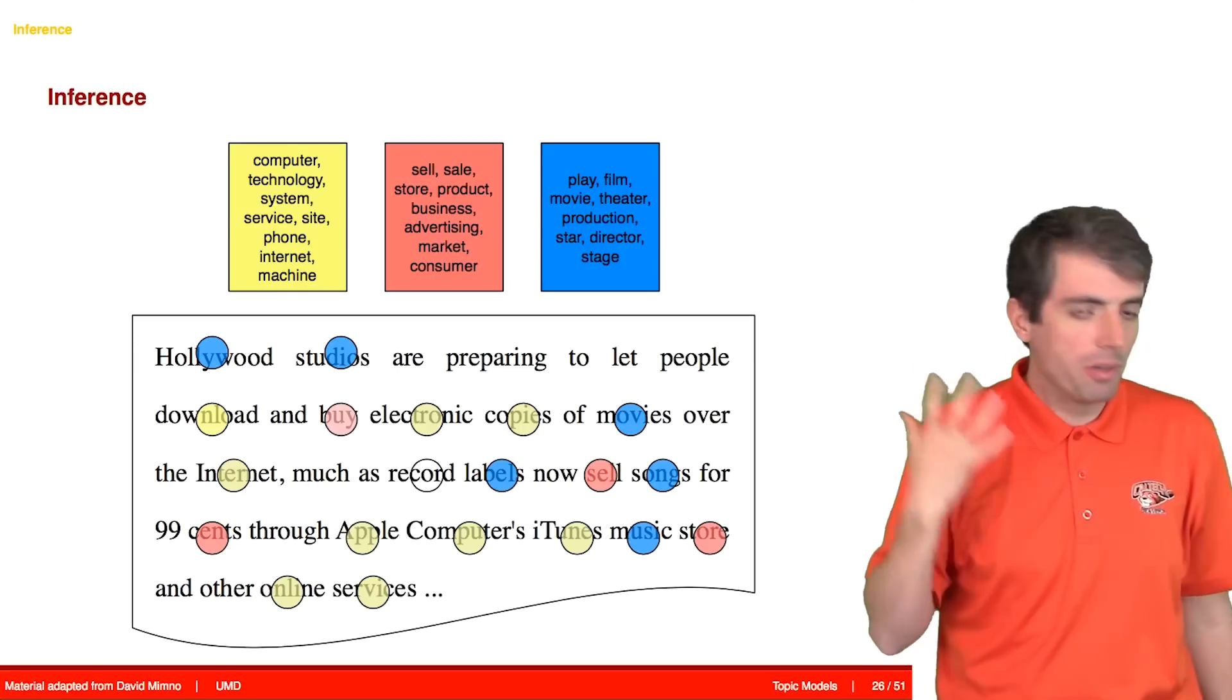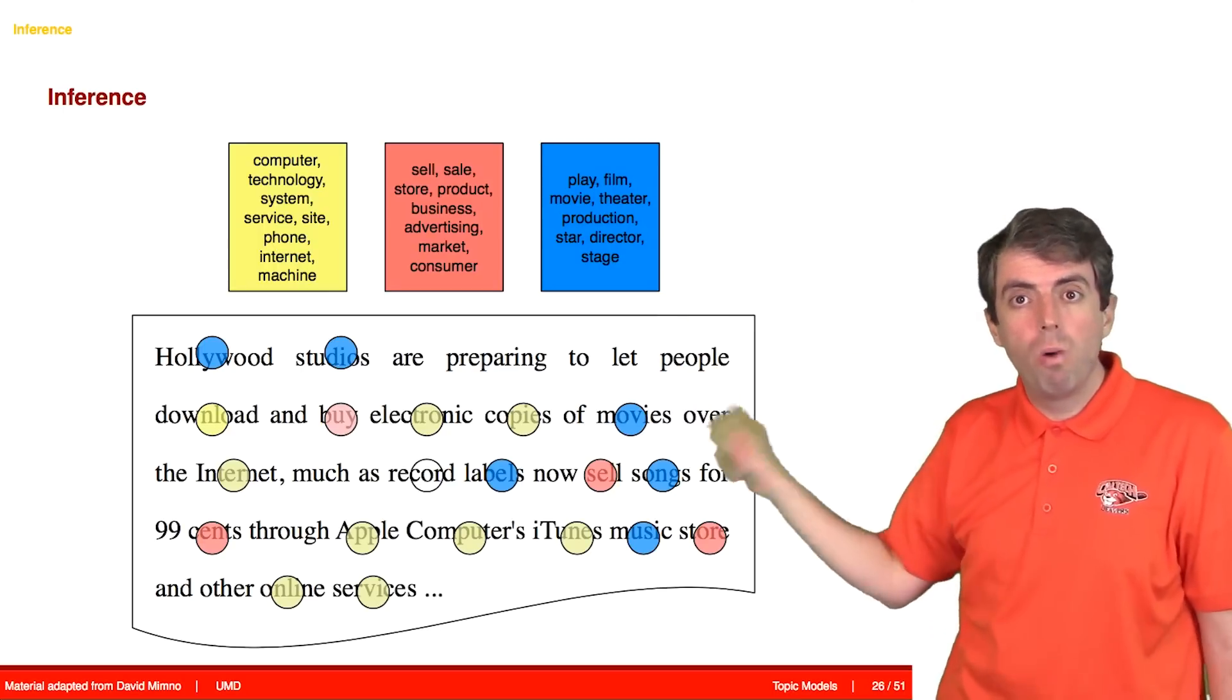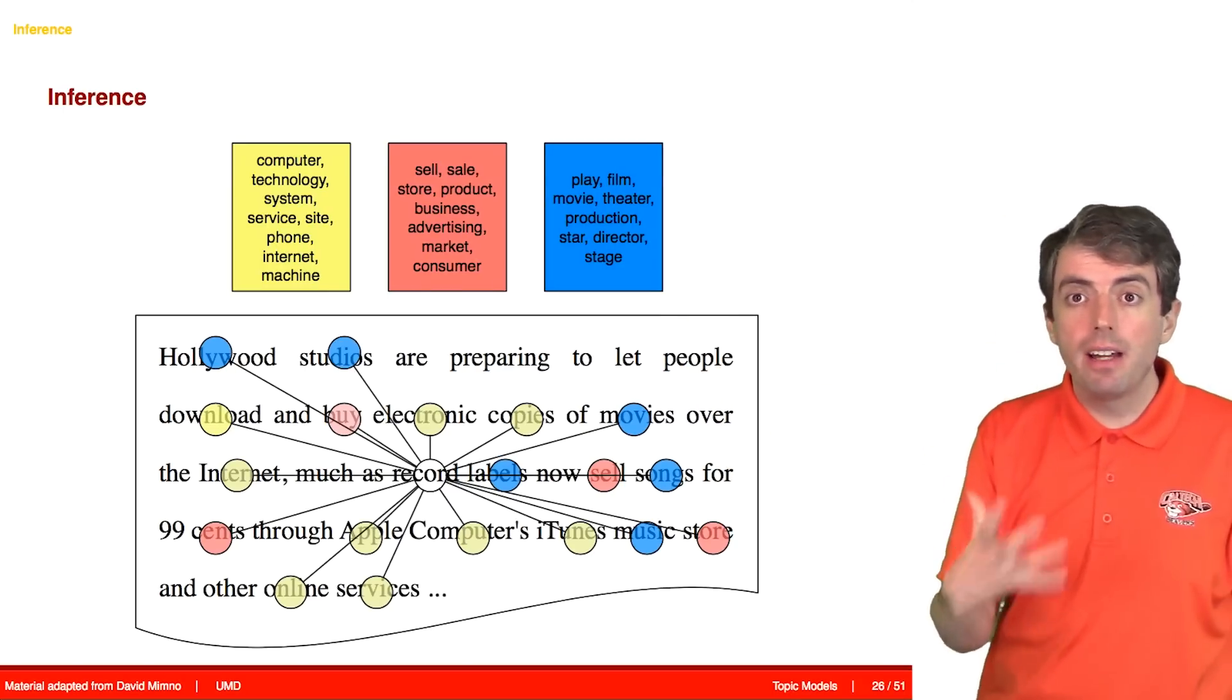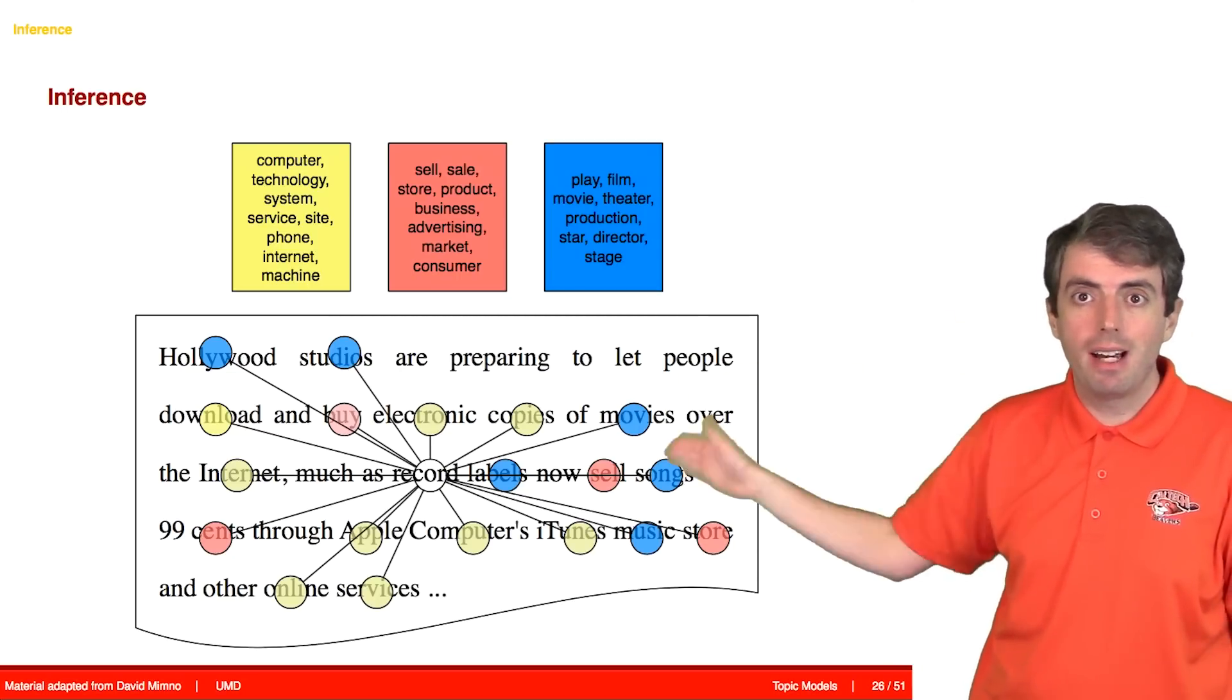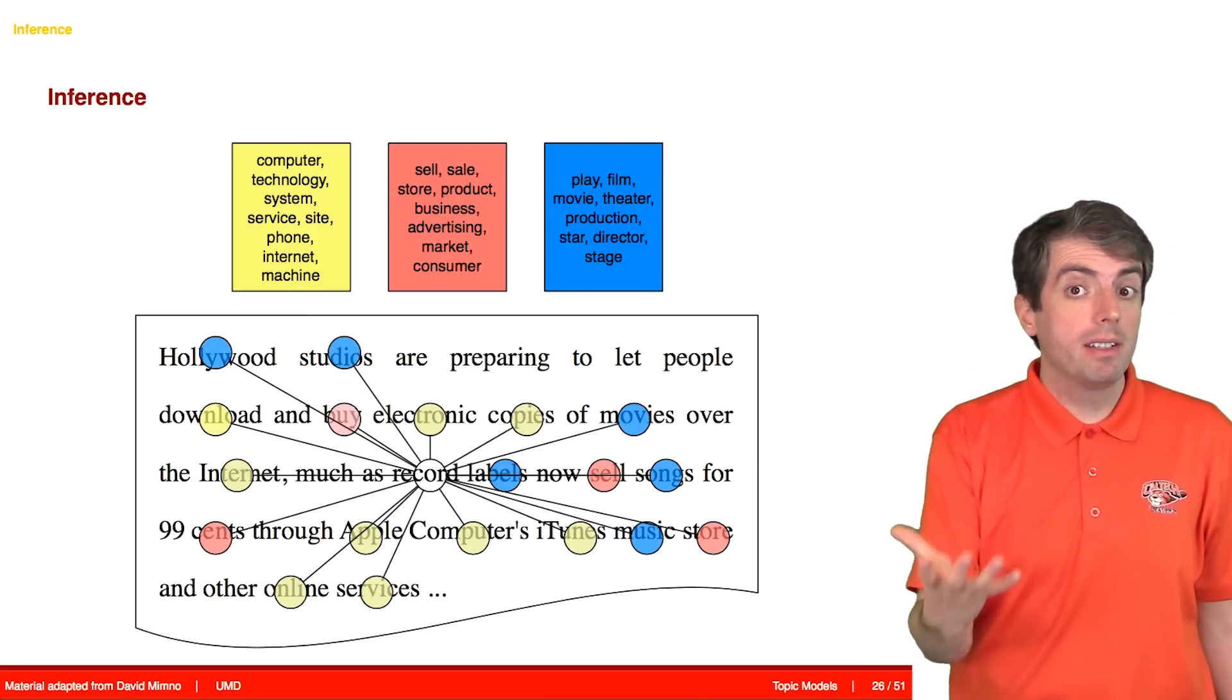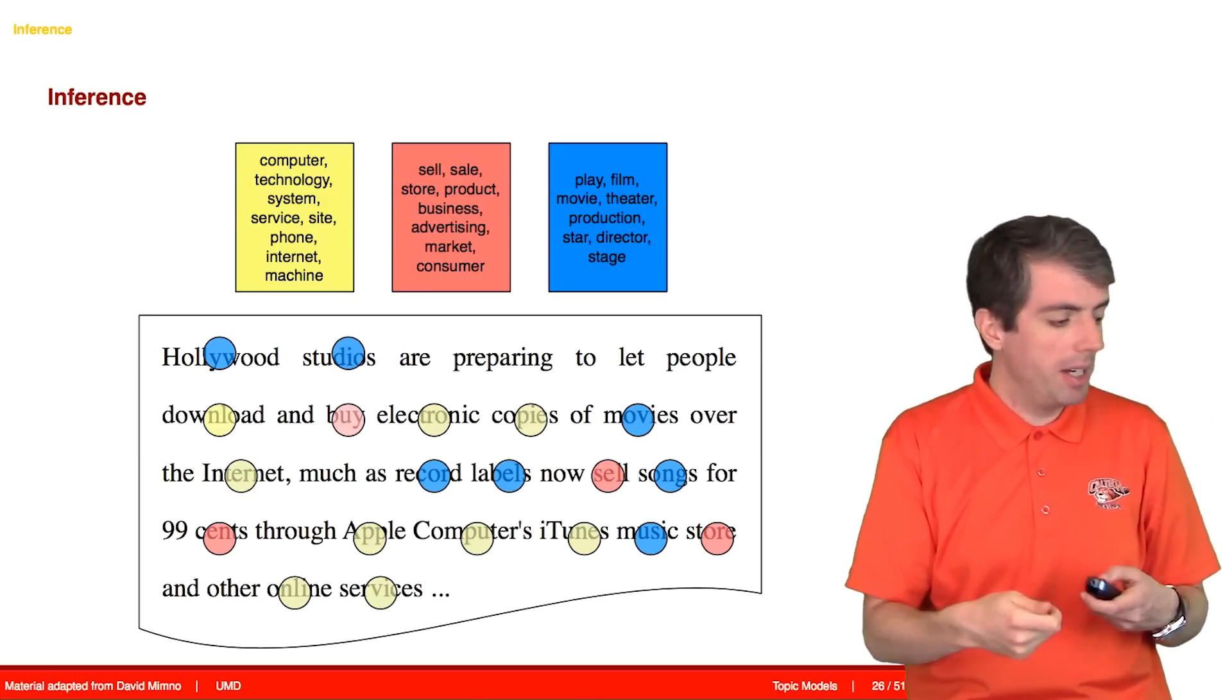In this case, the word record. And we want to figure out, given everything else we know, what topic should record get? And so all of the other topic assignments for all of the other words and all of the other documents will inform us what topic record should have. And we'll then figure out what topic record should get. That will change the model in some way.